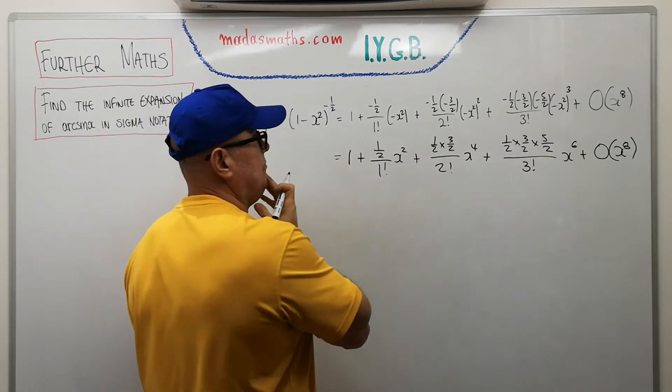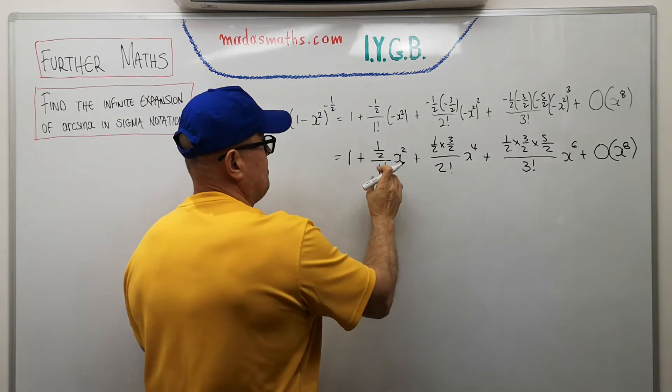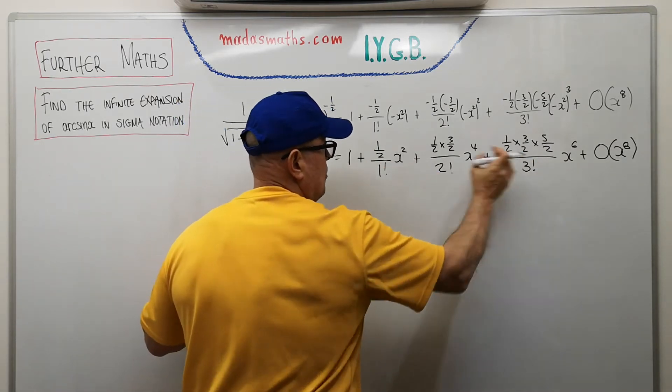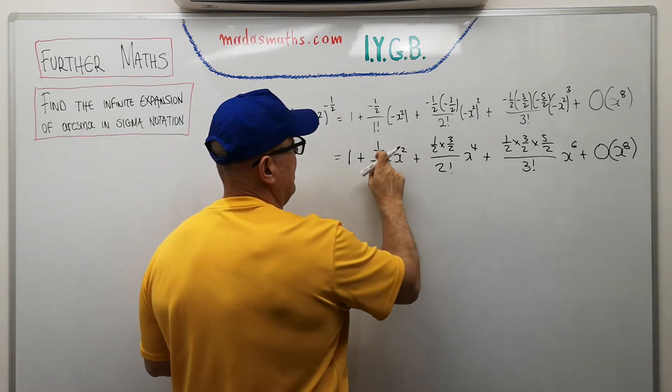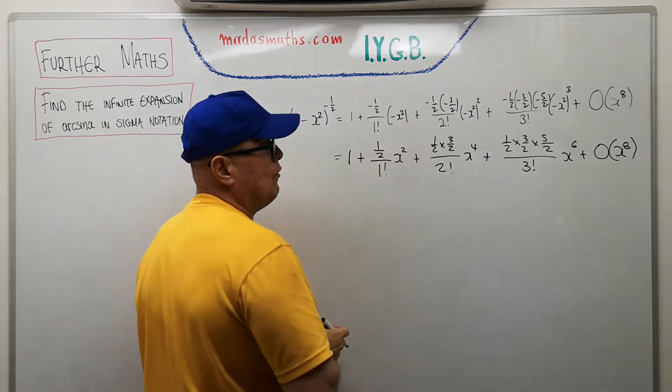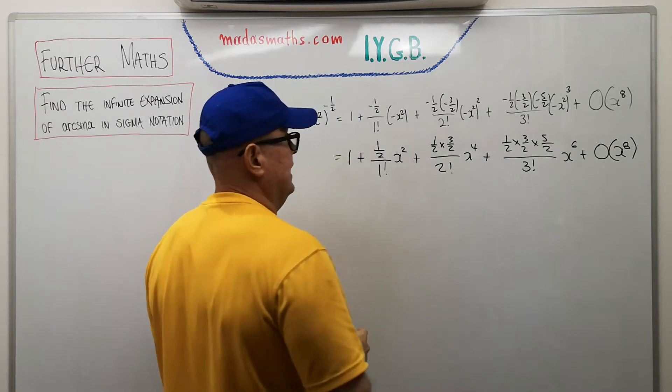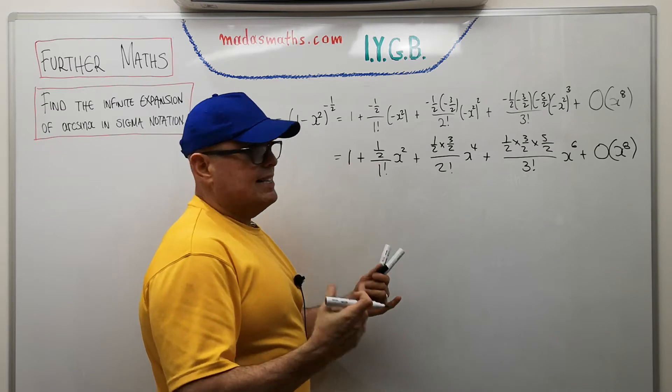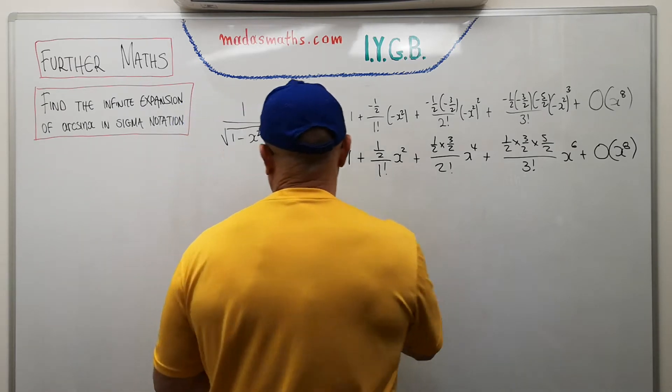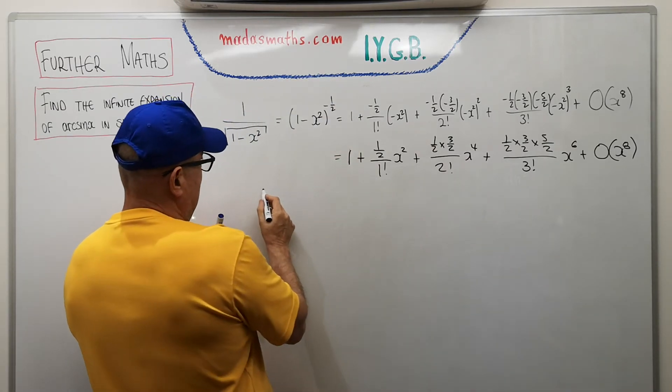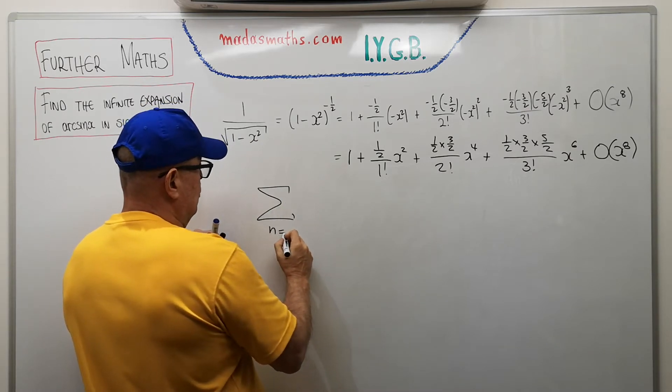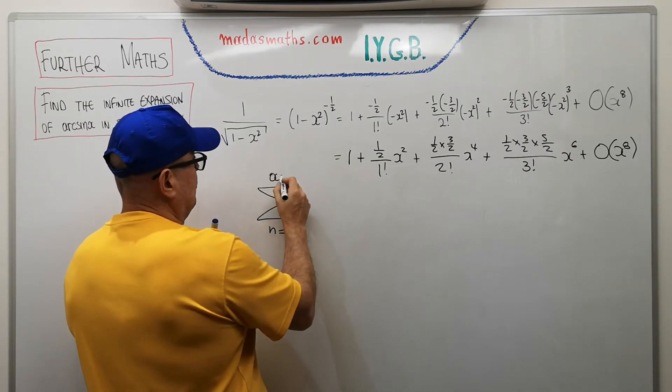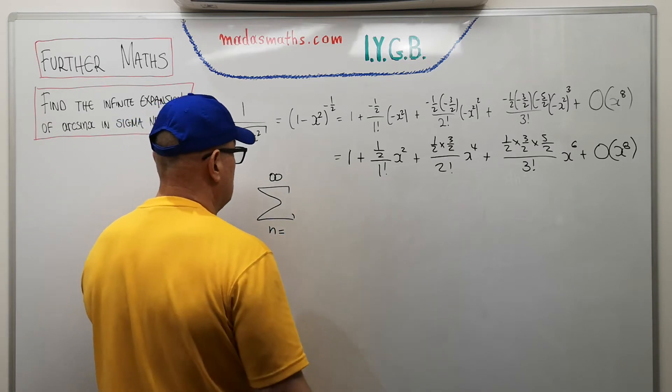So one plus a half over one factorial x squared plus a half times three over two over two factorial x to the power of four plus one more term. And now this is where the real work will begin, looking for a pattern in all of this. Okay, three factorial x to the sixth plus terms of at least order x to the eighth. There's an obvious pattern here with the factorials at the bottom, obviously, and the powers of x. That's not an issue. The annoying things is this half three over twos, five over twos.